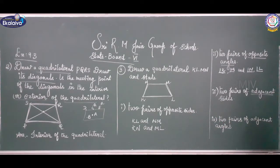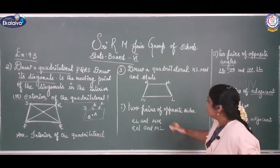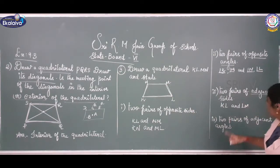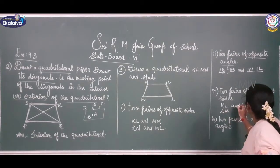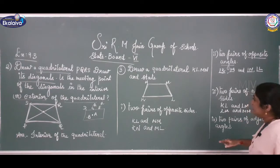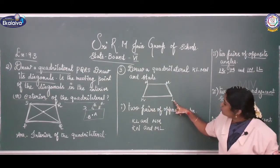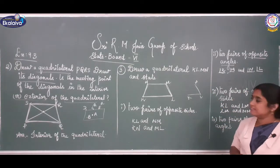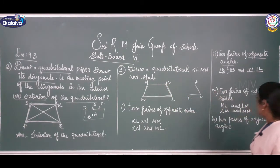Now talking about the 2 pairs of adjacent sides. Adjacent of K is L, so KL and LM are adjacent. Next, LM and NM are adjacent. So the adjacent sides are: KL and LM, and LM and MN.